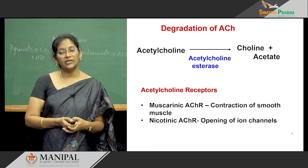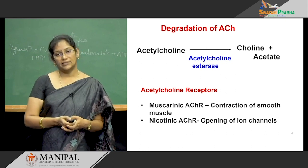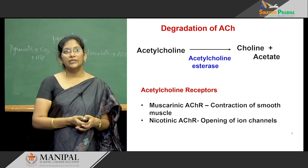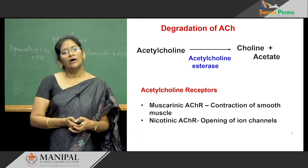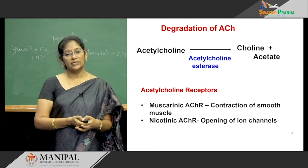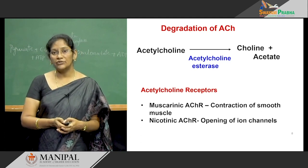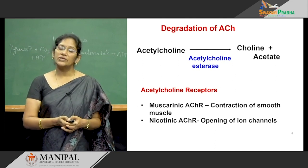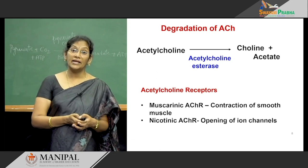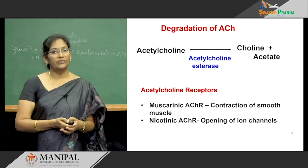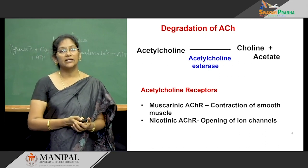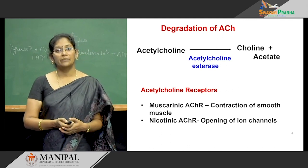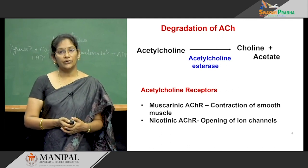There are mainly two types of acetylcholine receptors: muscarinic acetylcholine receptors and nicotinic acetylcholine receptors. Muscarinic acetylcholine receptors mainly help in the contraction of smooth muscles and also the release of neurotransmitters. Nicotinic acetylcholine receptors mainly help in the opening of ion channels, such as the calcium ion channels, and also assist in the release of neurotransmitters.